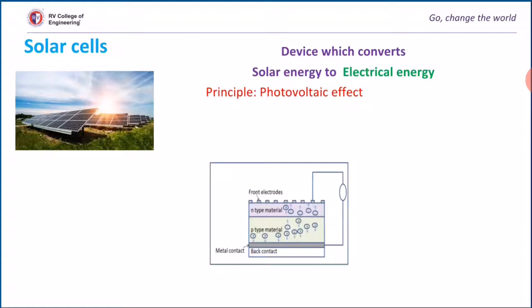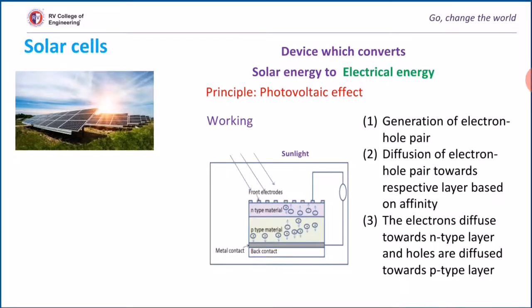Anti-reflective material is used in between the front electrodes in order to avoid the reflection of sunlight. Finally, these n-type and p-type layers are connected externally to the circuit. When sunlight is incident on the solar cell, photons strike the p-n junction, and an electron-hole pair is created at the junction by the absorption of photons.